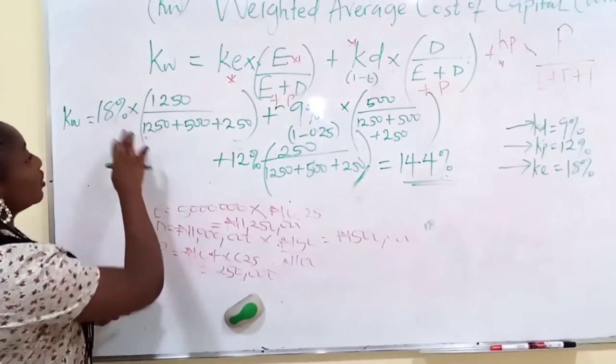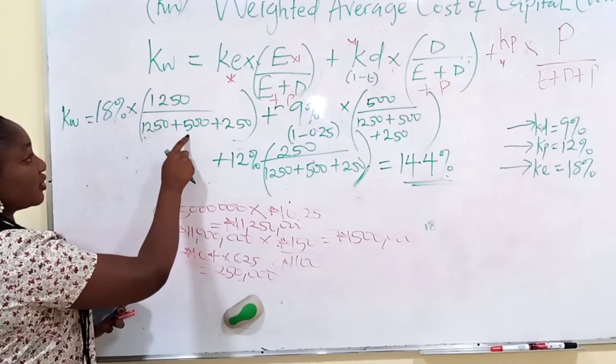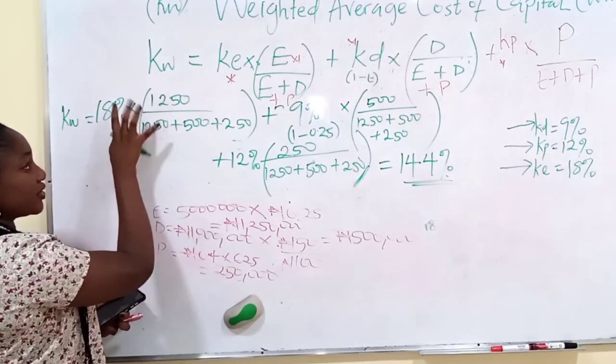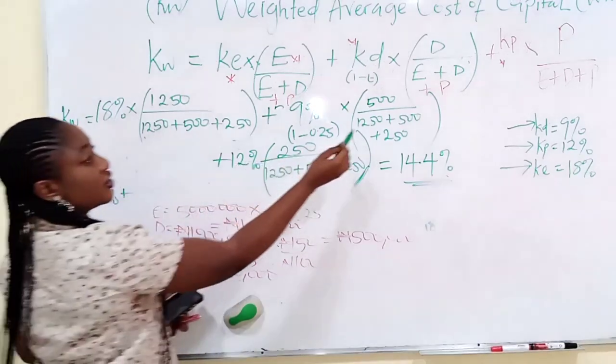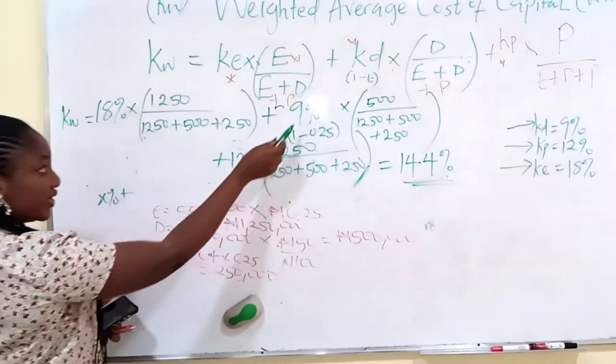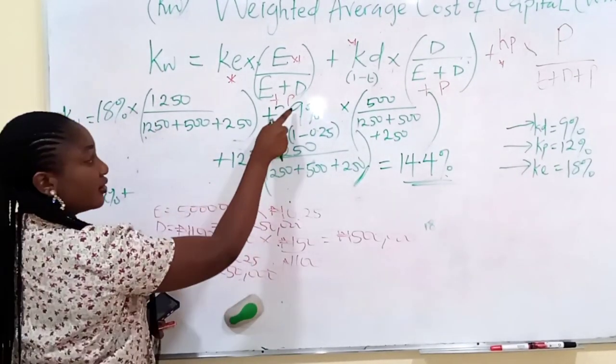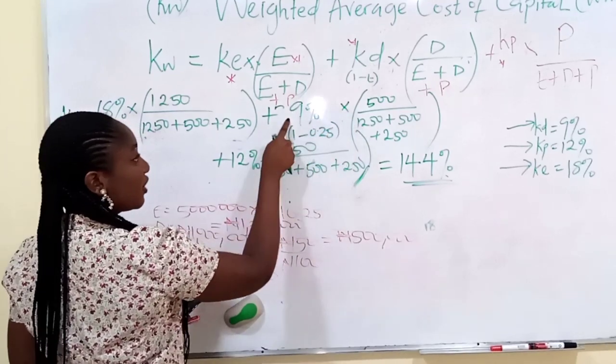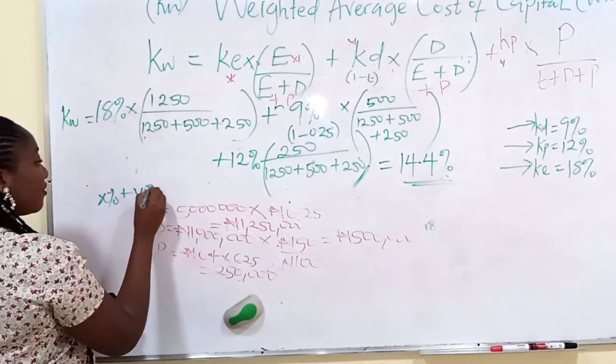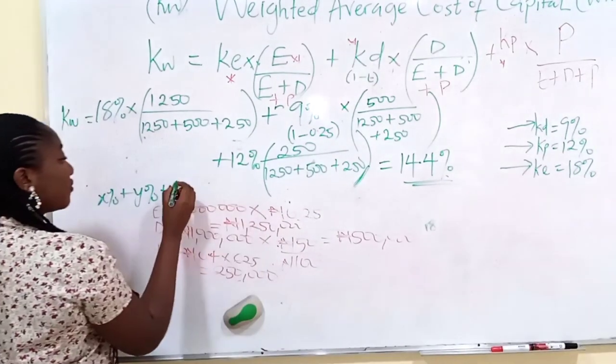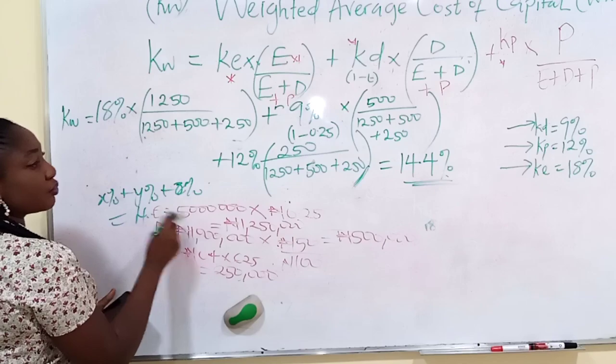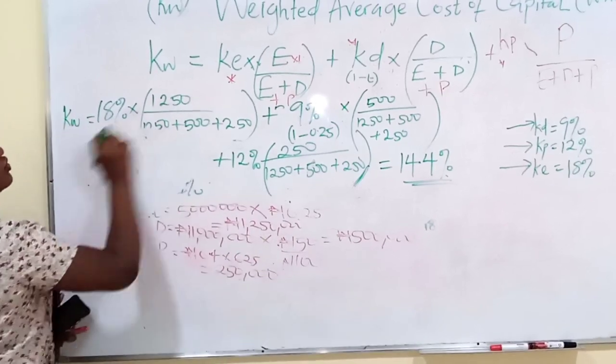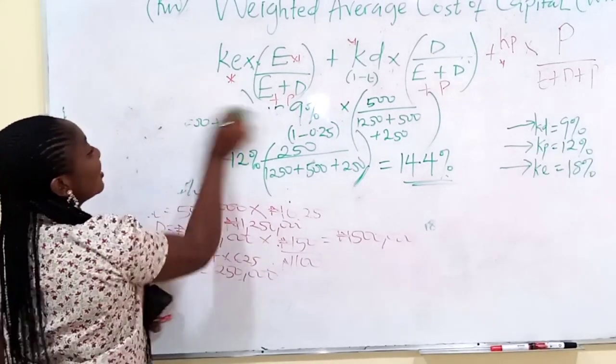I'm not going to start punching on the calculator now. You do the bracket first, then multiply by this, you get the particular value. Plus, open this bracket, multiply by 9. Open this bracket, multiply by this. Plus, do this bracket, multiply by 12. When you add everything together, you get 14.4%.